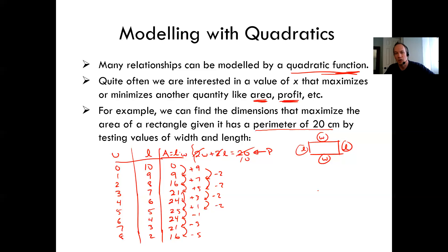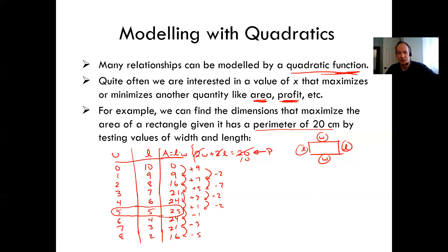Many relationships can be quadratic. The best solution looks like the biggest area is where we have a width of five and a length of five to get 25. But if you had to do that for every single problem — come up with table values, test, and go through — that would be very time consuming. So we're going to look at ways we can do this and other problems systematically.